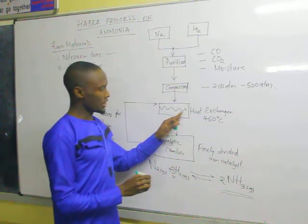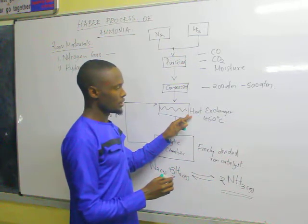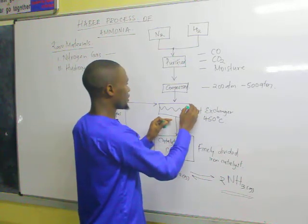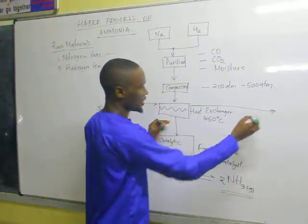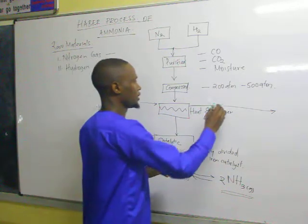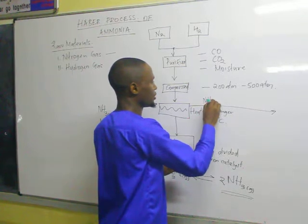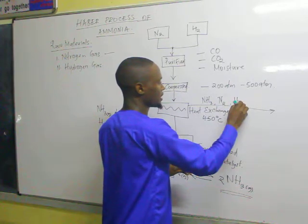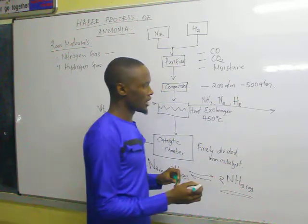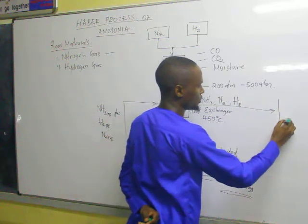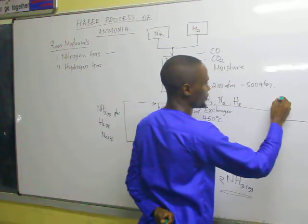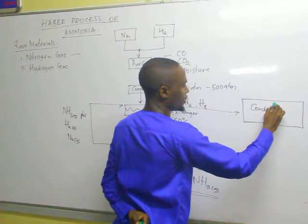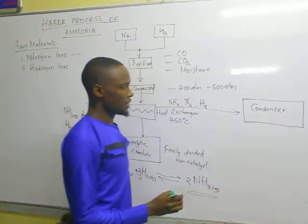The mixture is taken back to the heat exchanger where it is preheated. After being preheated, the ammonia gas along with the unreacted nitrogen and hydrogen gases is taken to another chamber called the condenser.